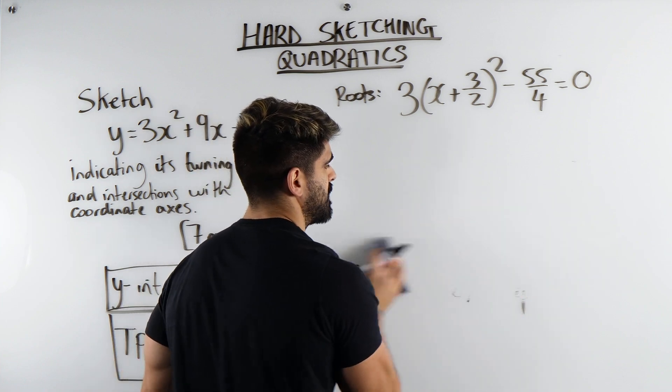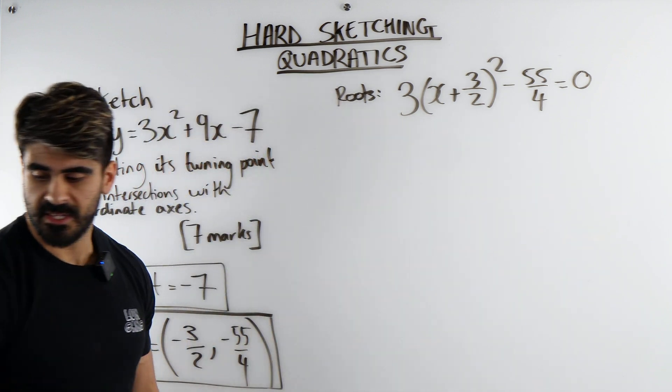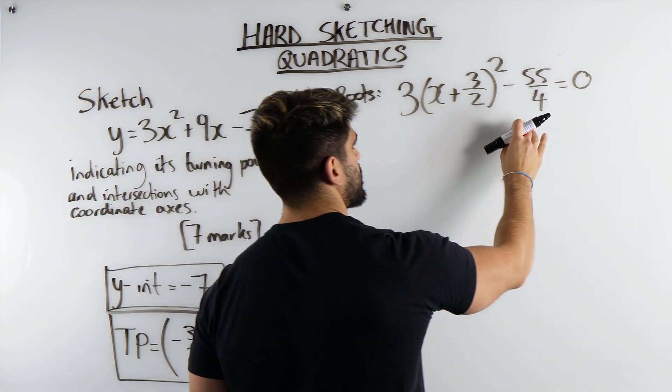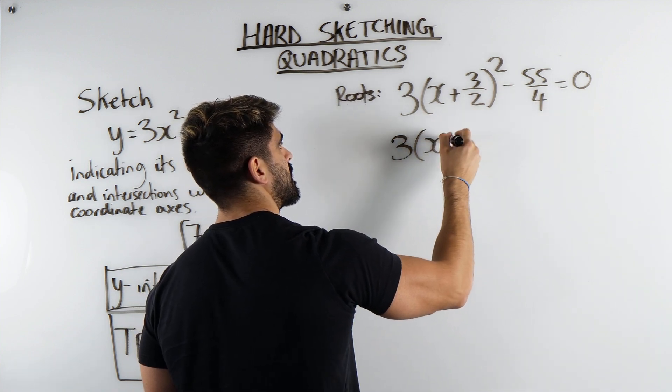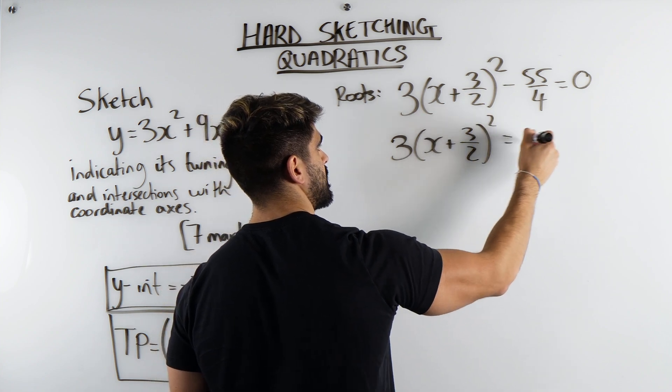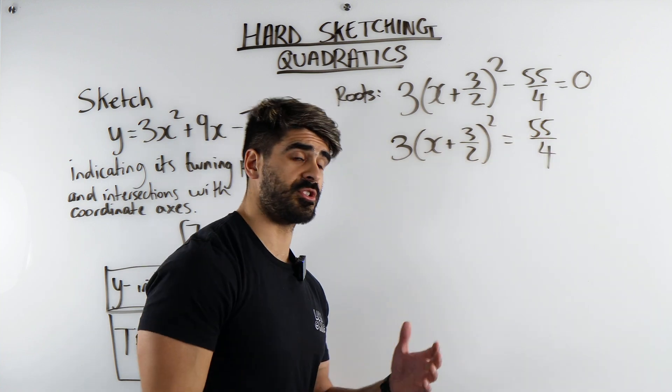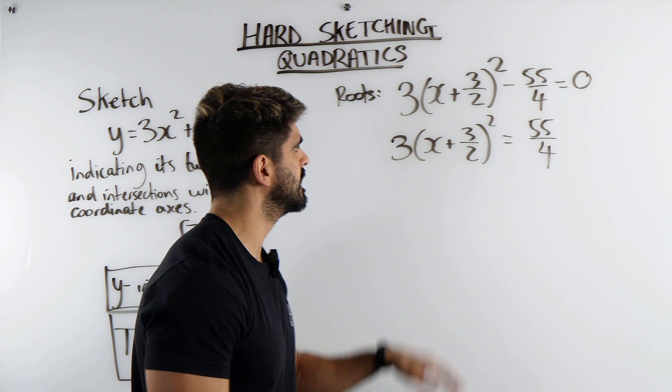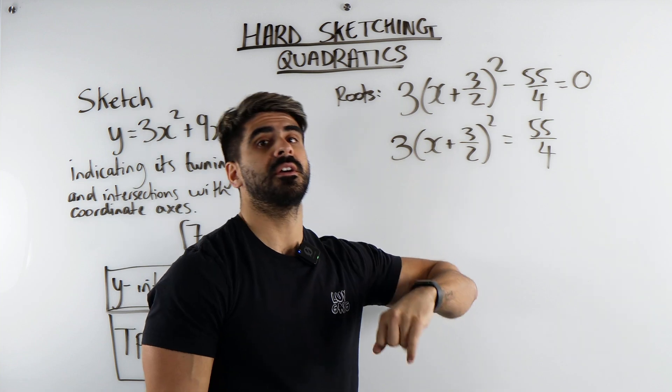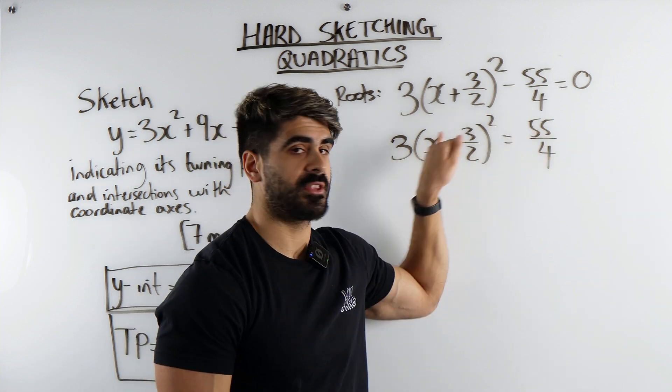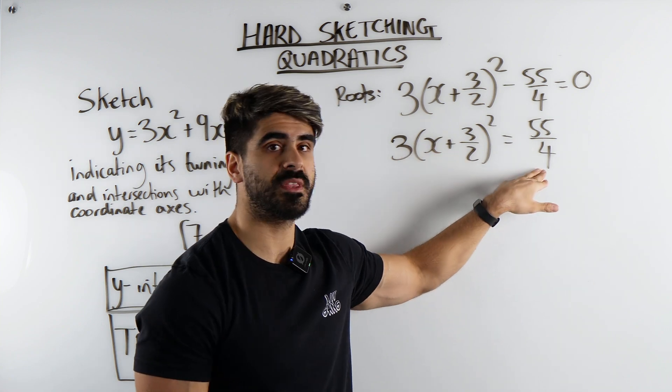Now, potentially a question like this could even be 8 marks in the exam, because of how tricky the algebra is here. So to rearrange for x, the first thing we're going to do is we're going to move this to the other side. So we get 3(x + 3/2)² = 55/4. The next thing we're going to do is we're going to divide by this coefficient. Now, when you divide by 3, or if we remember, when we multiply by 3, we would multiply the numerator. When we divide by 3, it goes to the denominator. It's going to join that 4 and make it 12.